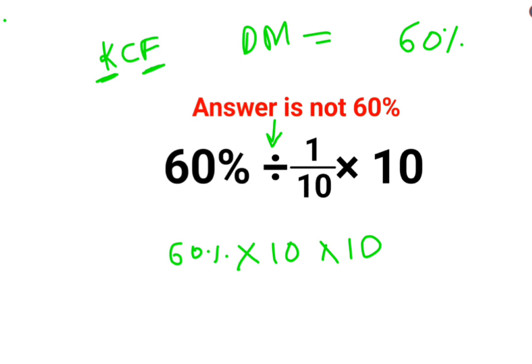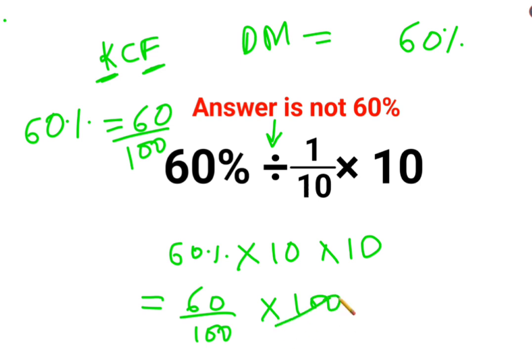A lot of people don't know this or rather they know but they forgot that 60%, any number with a percentage sign can be converted into a fraction by dividing it by 100. So here, this can be further written as 60 upon 100 multiplied by 10 into 10 that is also 100. So this gets cancelled.